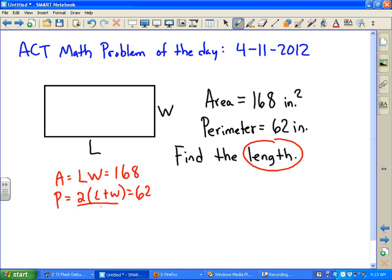We could divide this by 2 on both sides, and we wind up getting that the sum of the length and width is 31, and the area, the product, is 168.